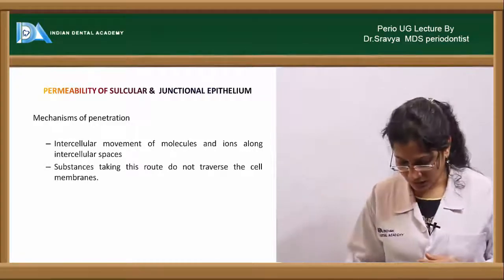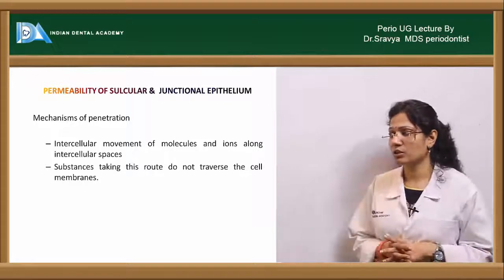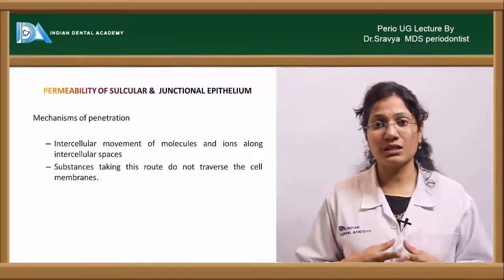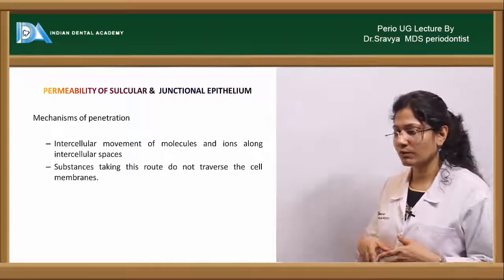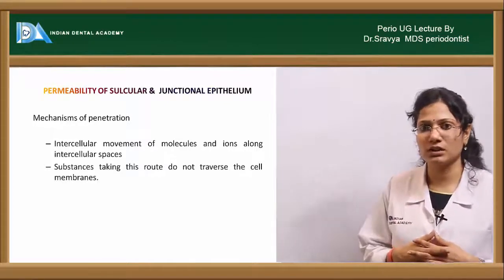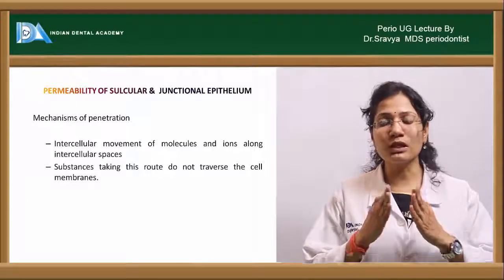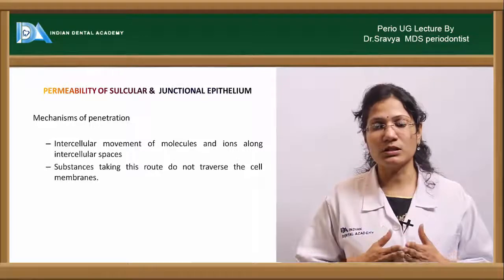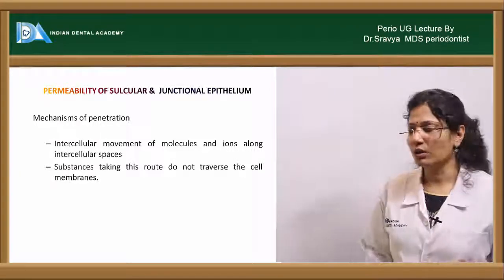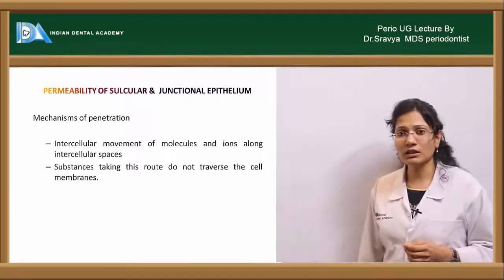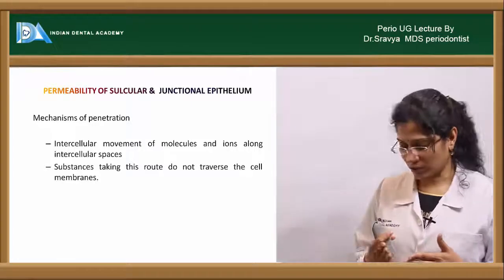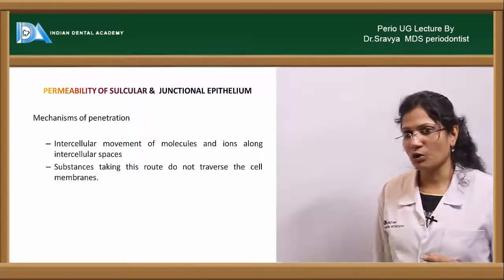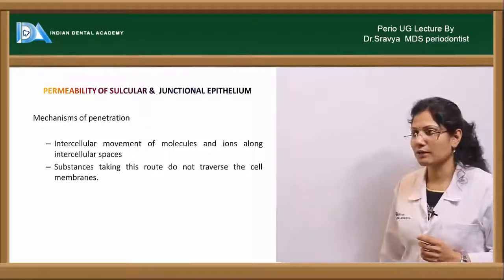The next topic covers permeability and the junctional and sulcular epithelium. The mechanism for passage of GCF from the junctional and sulcular epithelium into the gingival sulcus is through intercellular junctions — the intercellular movements of molecules. It is not traversing cell membranes; rather, the intercellular fluid exits into the gingival sulcus.